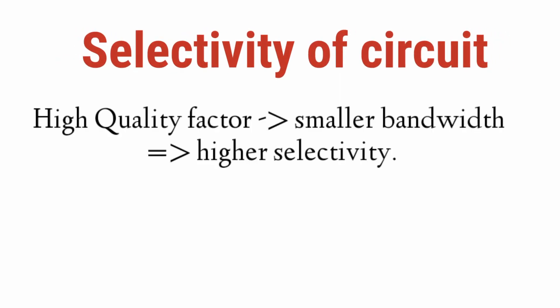What is the selectivity of the circuit? If the quality factor is high, the bandwidth will be small and the selectivity will be higher. In the case of a low quality factor, the bandwidth will be larger and the selectivity will be lower.